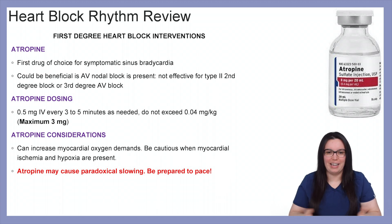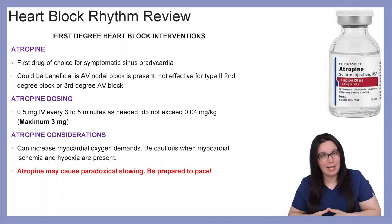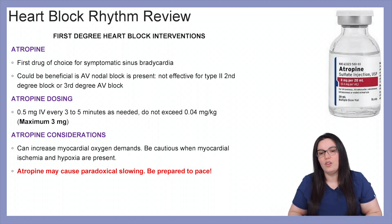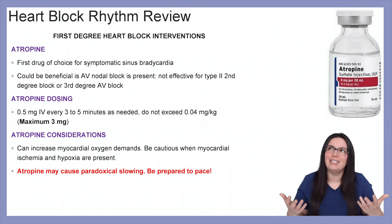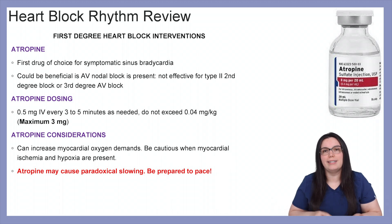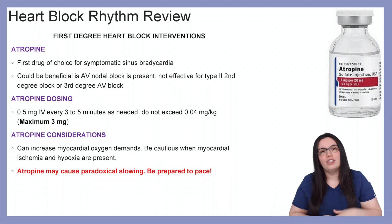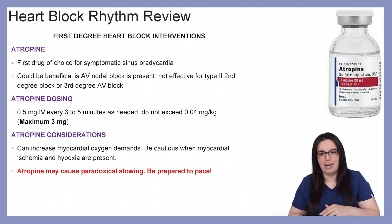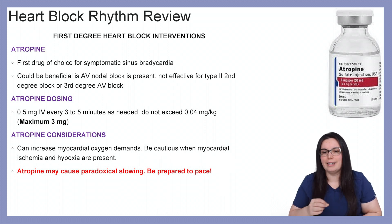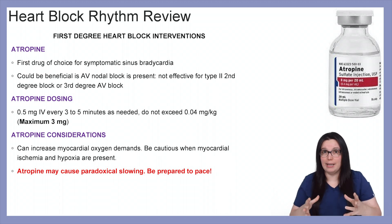Atropine is our first drug of choice for symptomatic sinus bradycardias. It can also be used in our AV nodal blocks; however, there really hasn't been shown any benefit in our second degree type 2 heart blocks or third degree complete heart blocks. You may still see it used, but it just might not show benefit. Atropine dosing is 0.5 milligrams IV every three to five minutes, not to exceed 0.04 milligrams per kilogram, with a maximum of three milligrams.